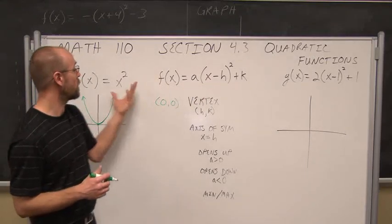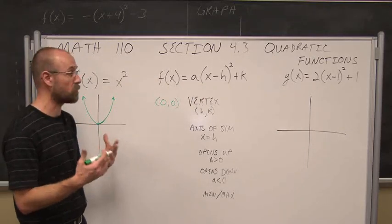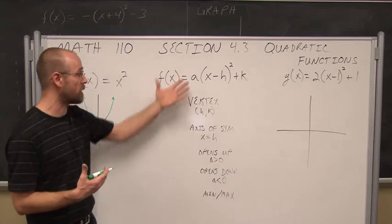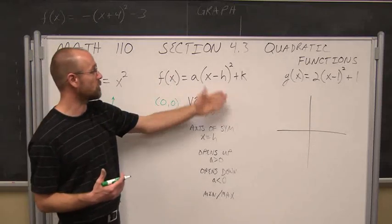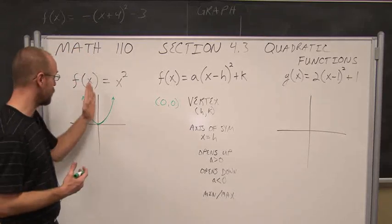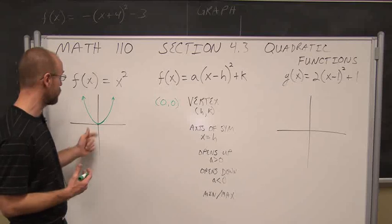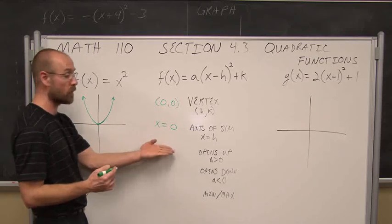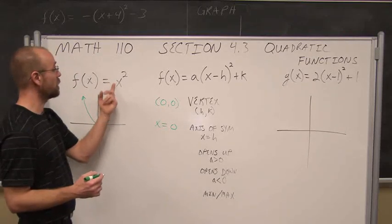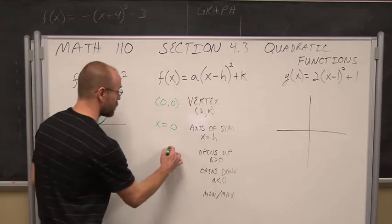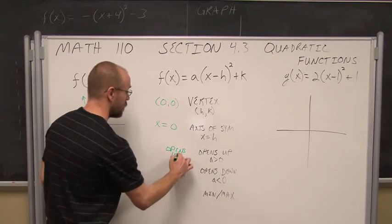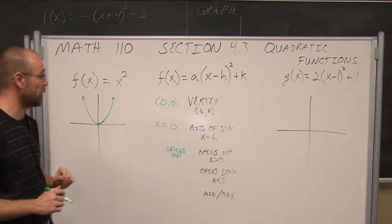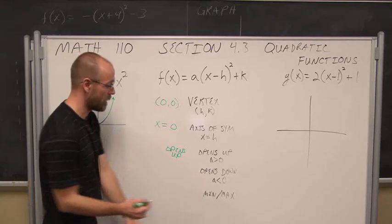Sometimes they're going to be written in quadratic form — ax squared plus bx plus c — but we're going to want to put it into standard form. When it's in that form, all the information we need is evident. The axis of symmetry is where x equals h. If we look at this one, we know it's symmetric with the y-axis, so its axis of symmetry is x equals 0, which is the h value of the vertex. Our coefficient is 1, so it's positive — that tells us it opens up because a is greater than 0. Because it opens up, we know this parabola has a minimum.